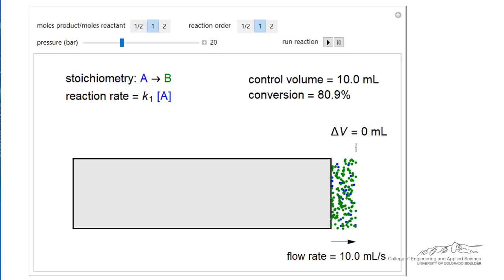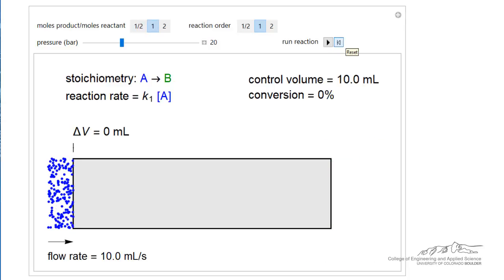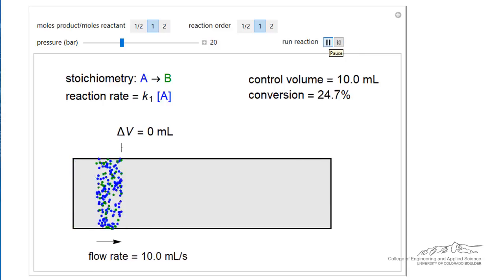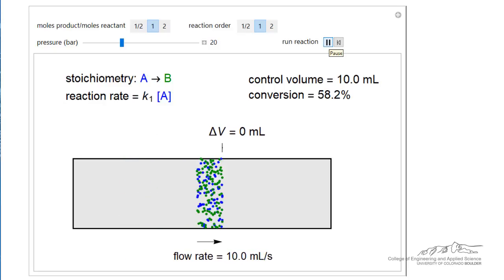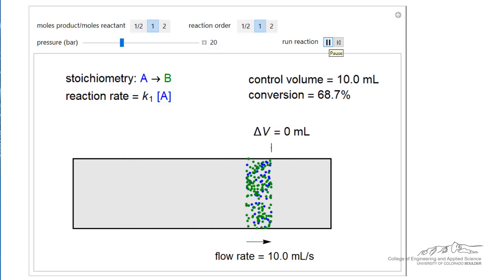Let's look at one more so we'll reset. We can look at a reaction where one mole of A forms one mole of B. So if we run that simulation notice there's no volume change. The number of moles hasn't changed. The volumetric flow rate remains the same.